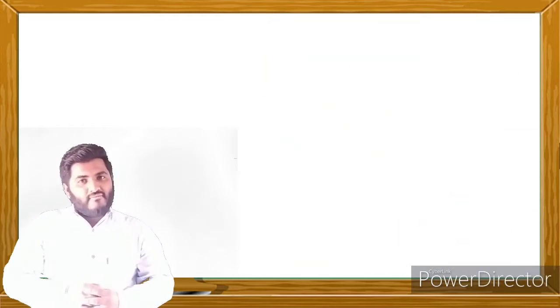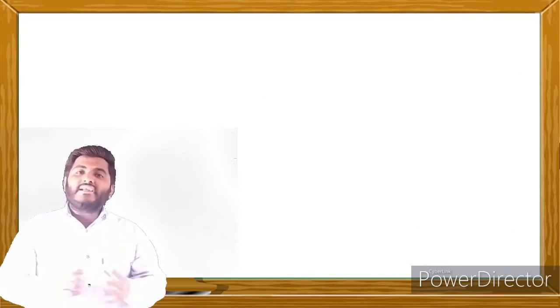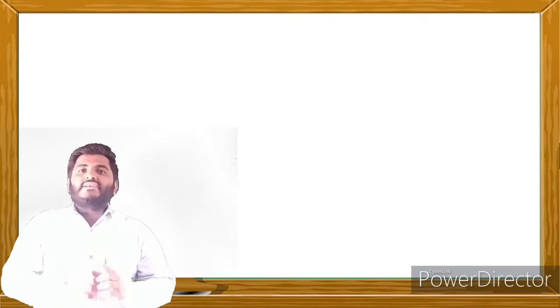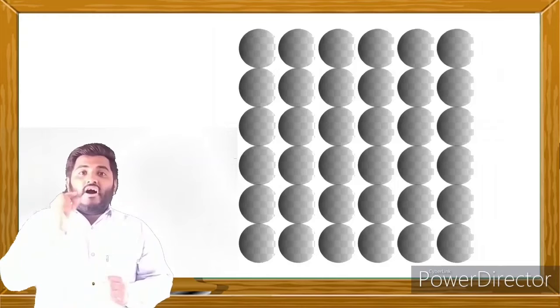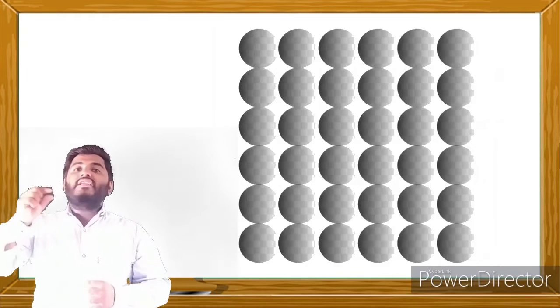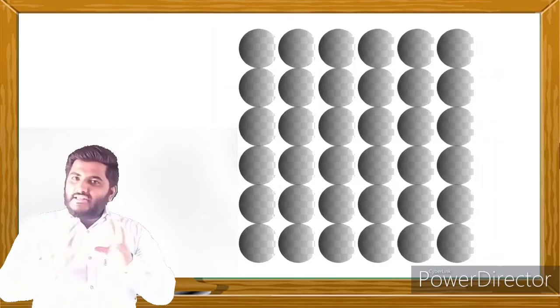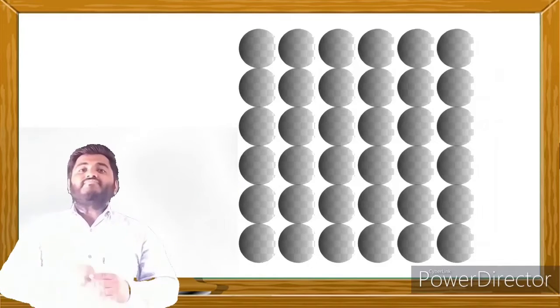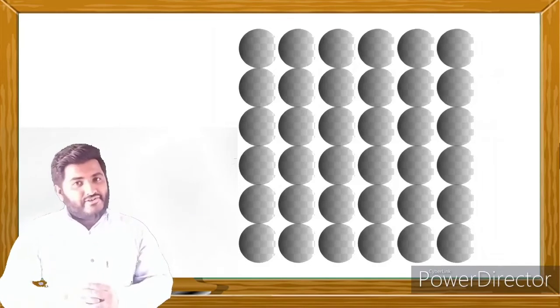Now we will study each type one by one. First, crystalline solids. Crystalline solids are solids which have a long-range ordered arrangement — that means a systematic arrangement of constituent particles. Examples of crystalline solids are NaCl, ice, and quartz. Because of this long-range orderly arrangement, they have a definite geometrical shape.